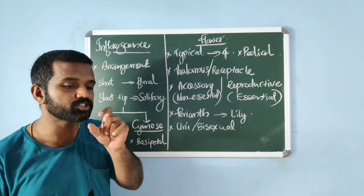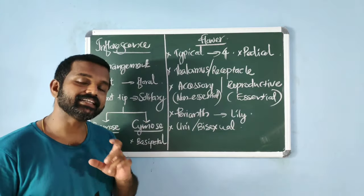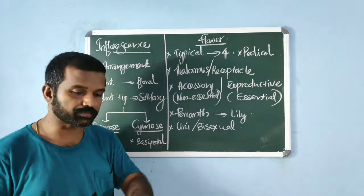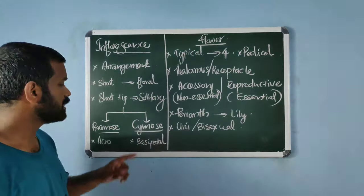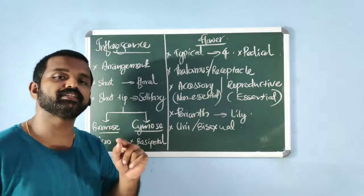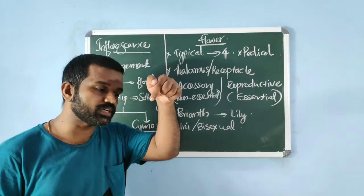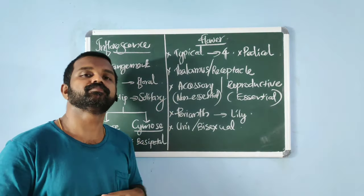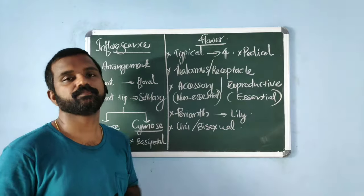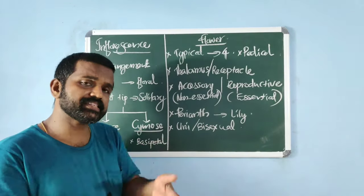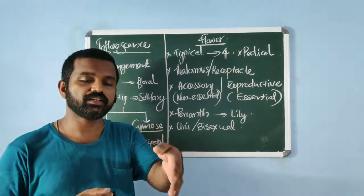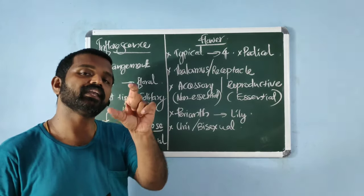In cymose inflorescence, the arrangement is basipetal — meaning growth towards the base, so younger flowers are seen towards the base. Examples of racemose inflorescence include plants from the families covered in our syllabus.